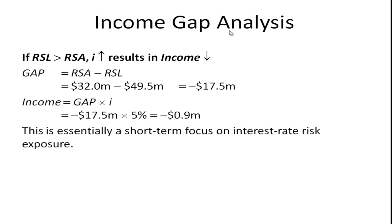The financial institution can look at the gap and run different scenarios — what if interest rates go up 1%, 2%, 5%? They may want to adjust their rate-sensitive assets and liabilities using various financial instruments or derivative securities like swaps, or they may choose to sell off some of their mortgages — different kinds of hedging to reduce interest rate exposure. You can't manage it if you don't understand it, and gap analysis is a good way to understand what's going to happen to the financial institution's income should interest rates change.